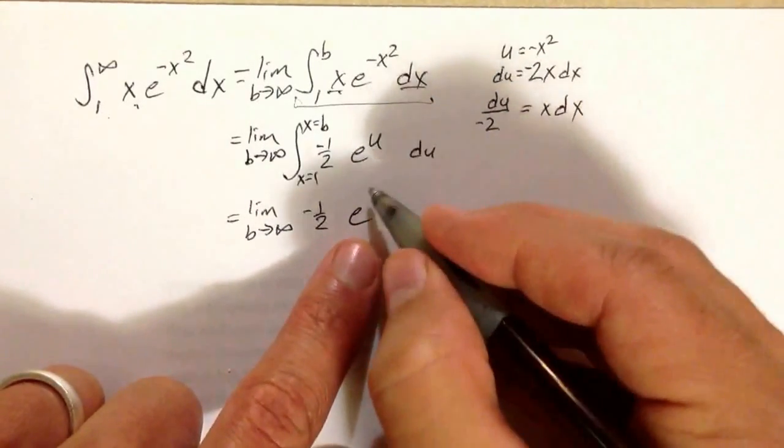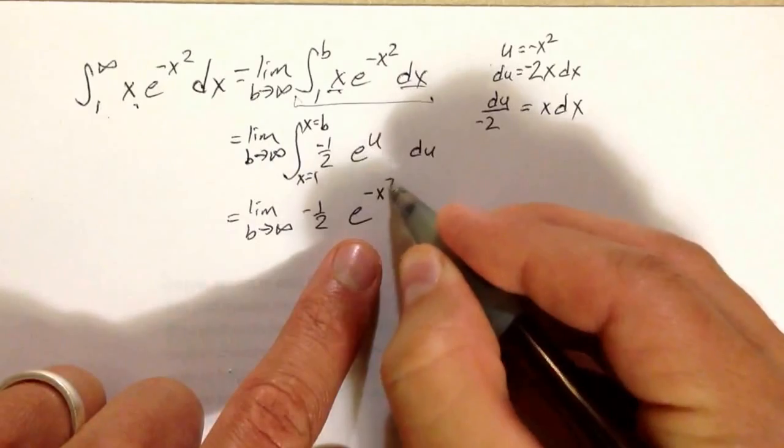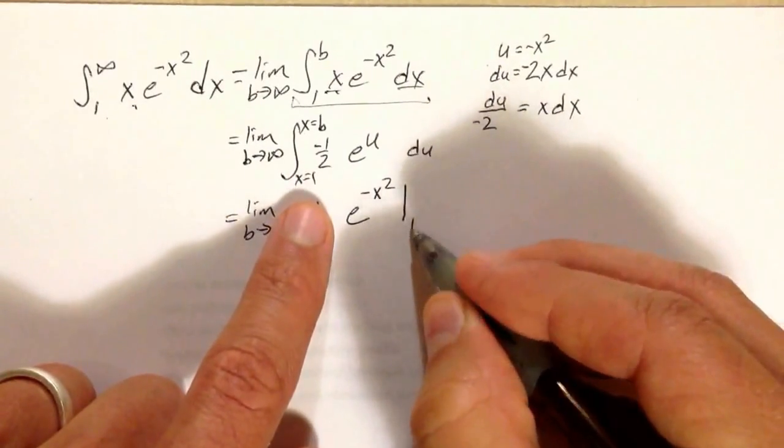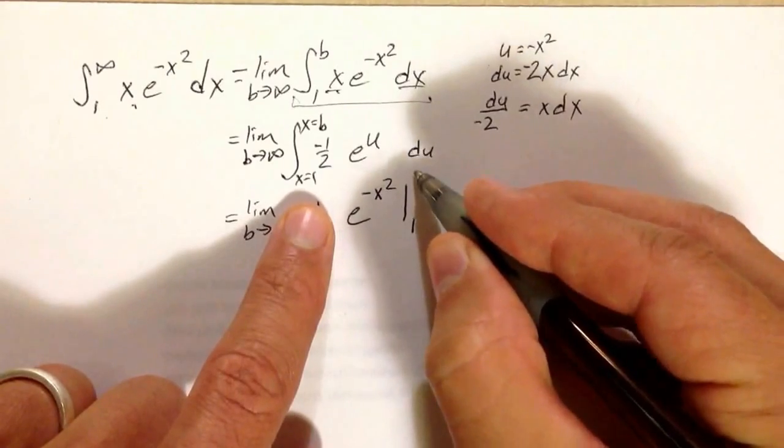I'll take the liberty of, instead of writing e^u, writing e^(-x²), which is really the same thing. That means I can evaluate from x equals 1 to x equals b.